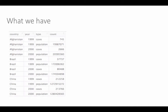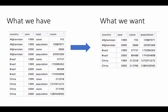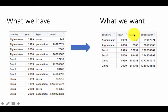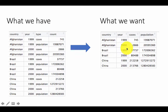Looking at table 2, this is what we have, but this is what we want. We want the cases and population column split into two different column titles — the data in the type column will become column titles, and the counts will get spread across those two columns. So the cases values would go into a cases column, and the population values would go into a population column.